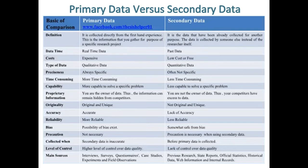Primary data is real-time data while secondary data is past data. Primary data is expensive while secondary data is low-cost or free. The type of primary data is qualitative data while the type of secondary data is quantitative data. Preciseness of primary data is always specific while preciseness of secondary data is often not specific.